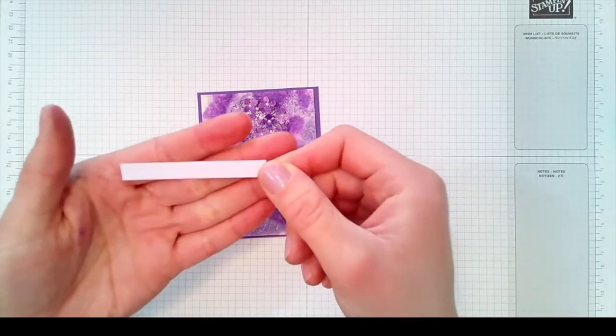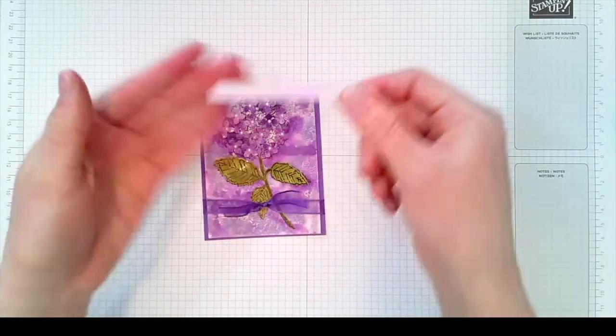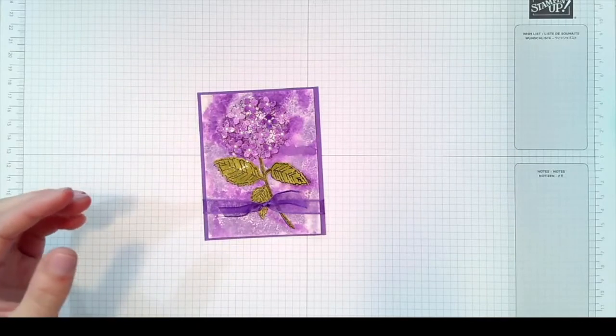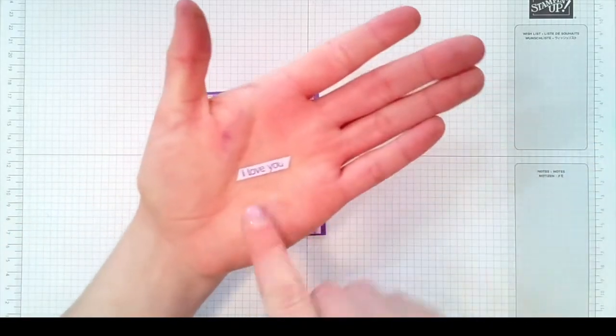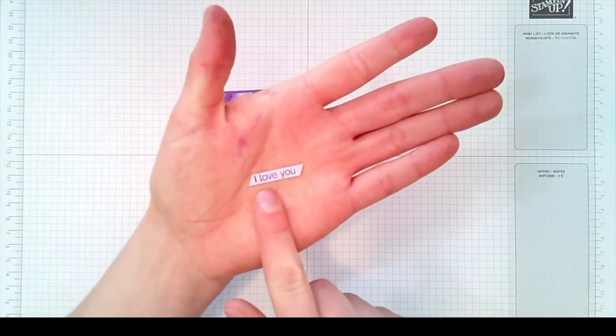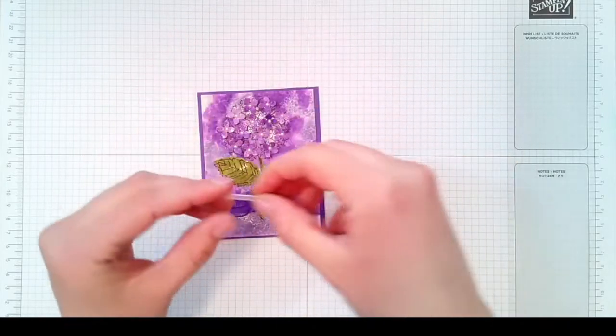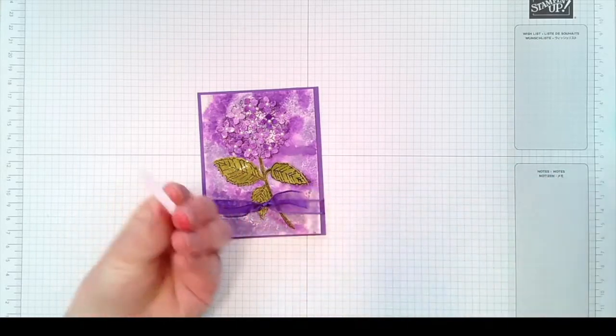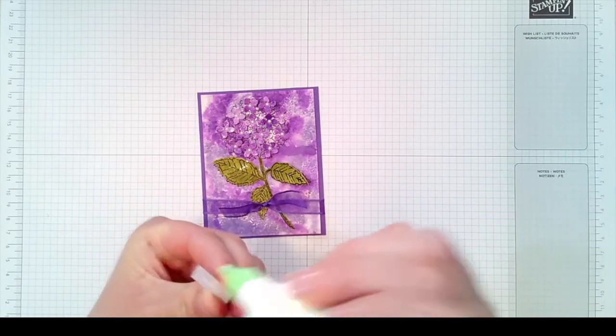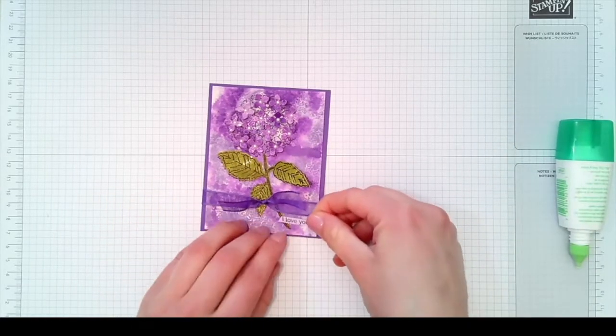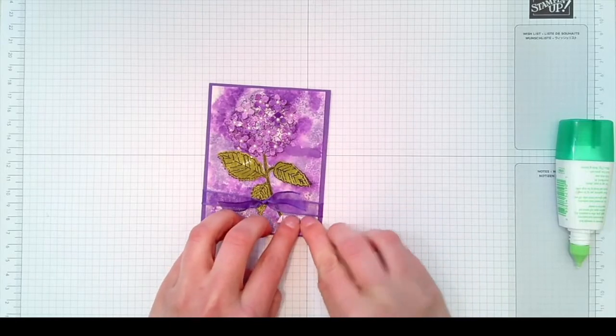Then we can trim the excess off and I also took a small piece of the purple posy, quarter inch little strip and I stamped a gorgeous grape 'I love you' that comes along in the hydrangea Haven stamp set. I put a little diagonal cut to it. We can put a little Tombow on that and attach that right here under our ribbon for our little greeting.